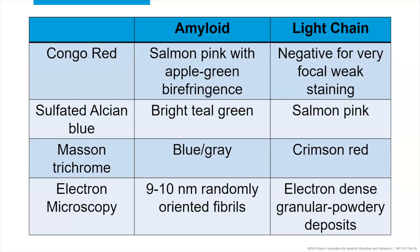Trichrome gives a very distinctive crimson red in light chain deposition disease, in contrast to a blue-gray color in amyloid. If you have sulfated alcian blue, you get salmon pink in light chain versus bright teal in amyloid — very different colors with no chance of misdiagnosing them. Congo red in light chain could be focally positive, weak looking, or completely negative. You can have amyloid and light chain deposition disease in the same biopsy and same patient — and you get a nice mix of the two colors. On electron microscopy, amyloid gives 9-to-10 nanometer randomly oriented fibrils, while light chain looks more like dense powdery deposits.